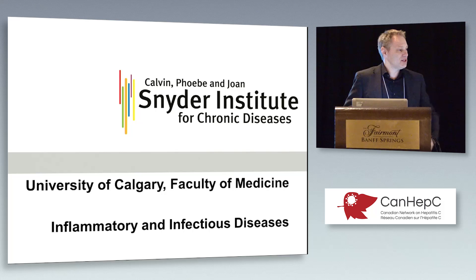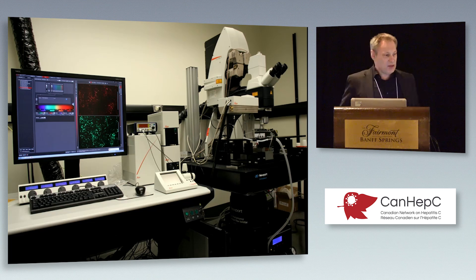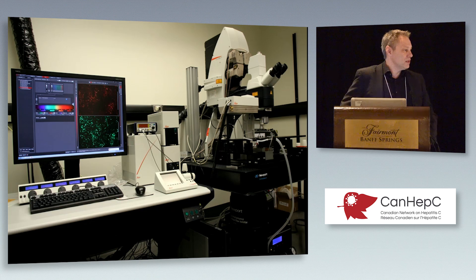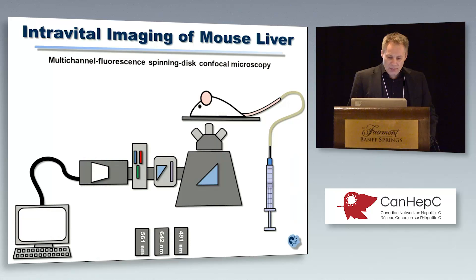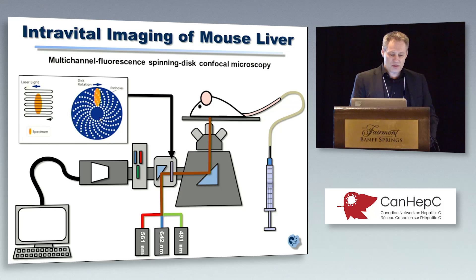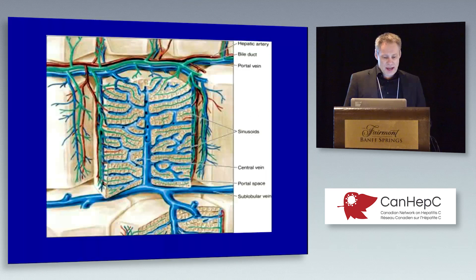We use various microscopes that allow us to image what happens within the liver. We usually use spinning disk although we also use two-photon. The spinning disk microscope allows us to capture images very, very quickly rather than doing a rostral screen the way a two-photon might do. And you'll see why this is important in a second.